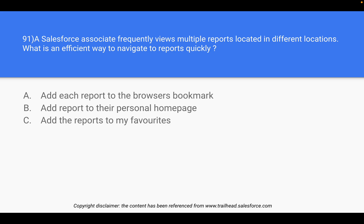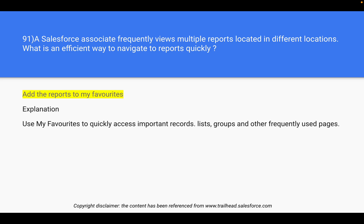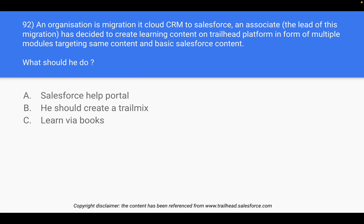Question 91: A Salesforce associate frequently views multiple reports located in different locations. What is an efficient way to navigate to reports quickly? Options include adding each report to browser bookmarks, adding reports to the personal home page, or adding reports to My Favorites. In Salesforce, if you want to view a report or dashboard again and again, the functionality called My Favorites is present — it provides quick access to important records.